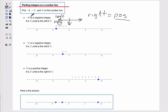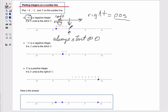In order to plot negative 4, we always start at zero. We count negative 4 places: negative 1, negative 2, negative 3, negative 4. Put our dot, and that's it for the 4 — we've plotted that.